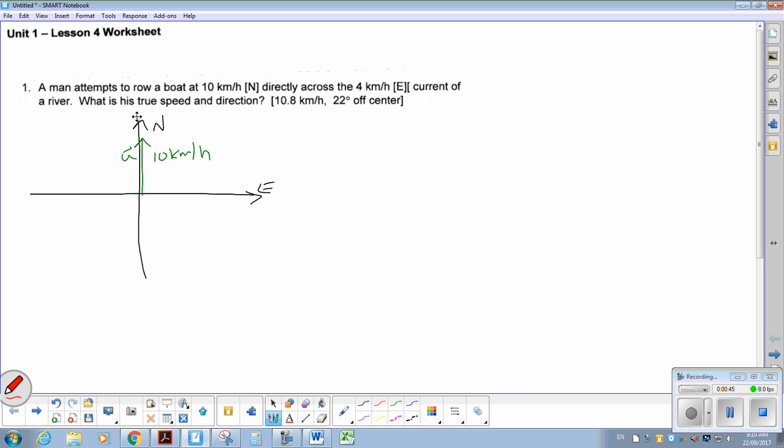Next, he's going directly across the 4 kilometer an hour east current. So the current is heading east at 4 kilometers an hour. So this is going to be my second vector. And I'll call that my V vector.